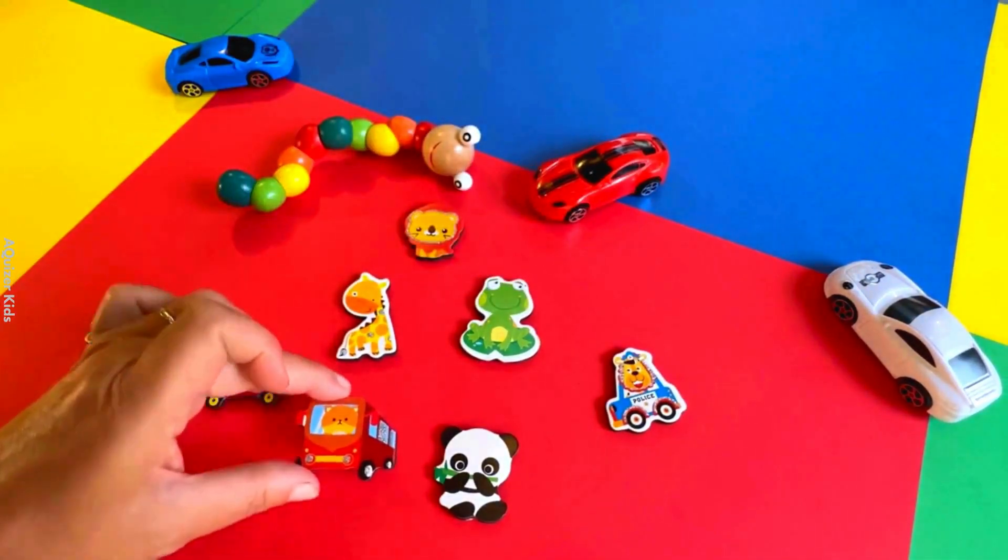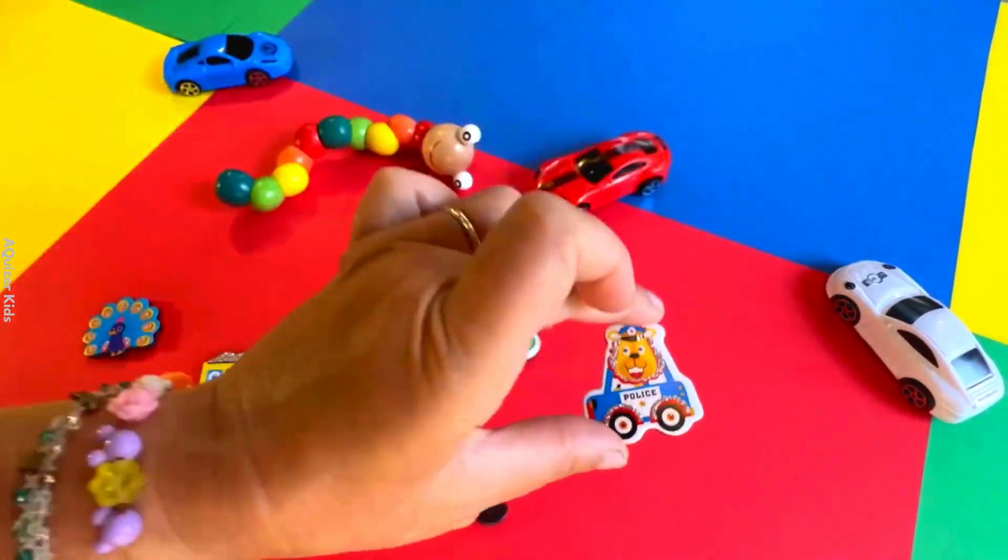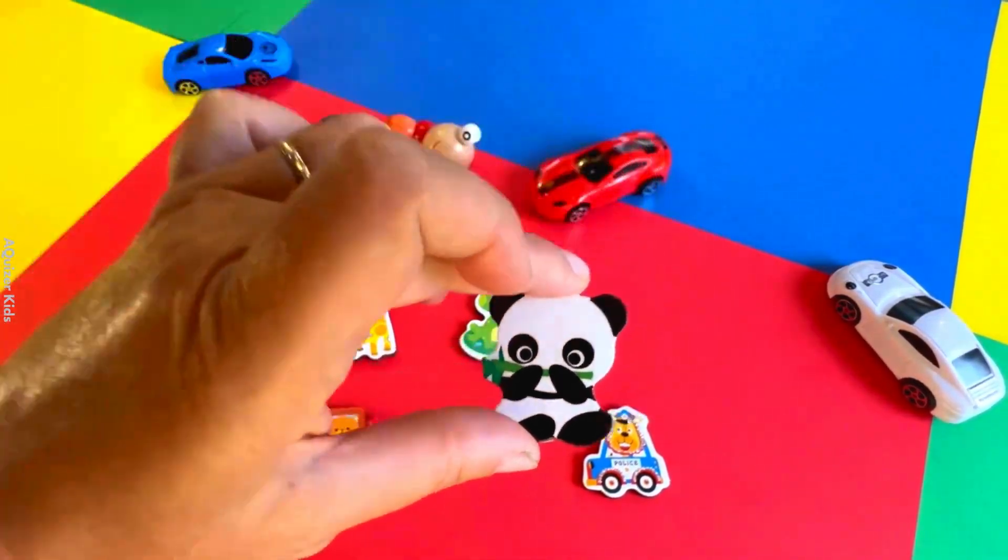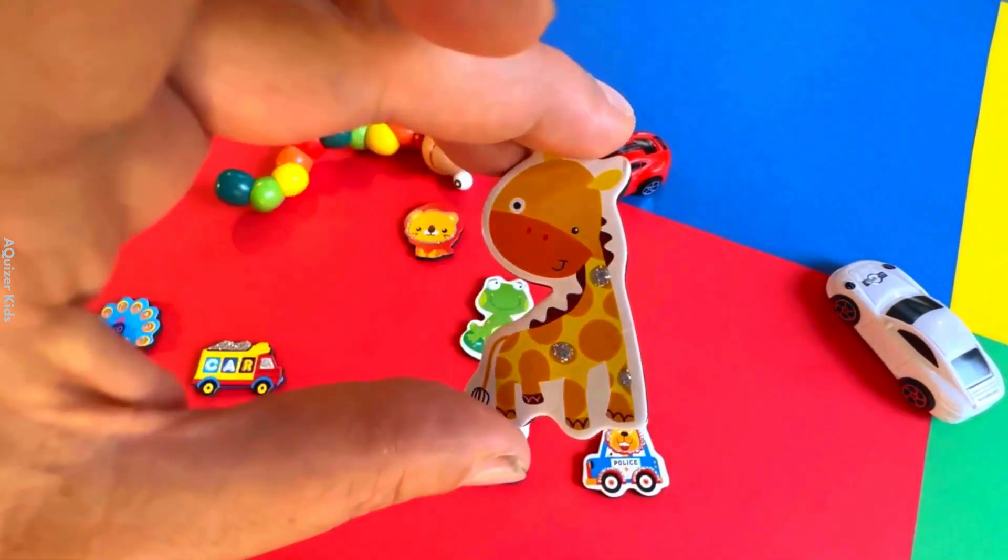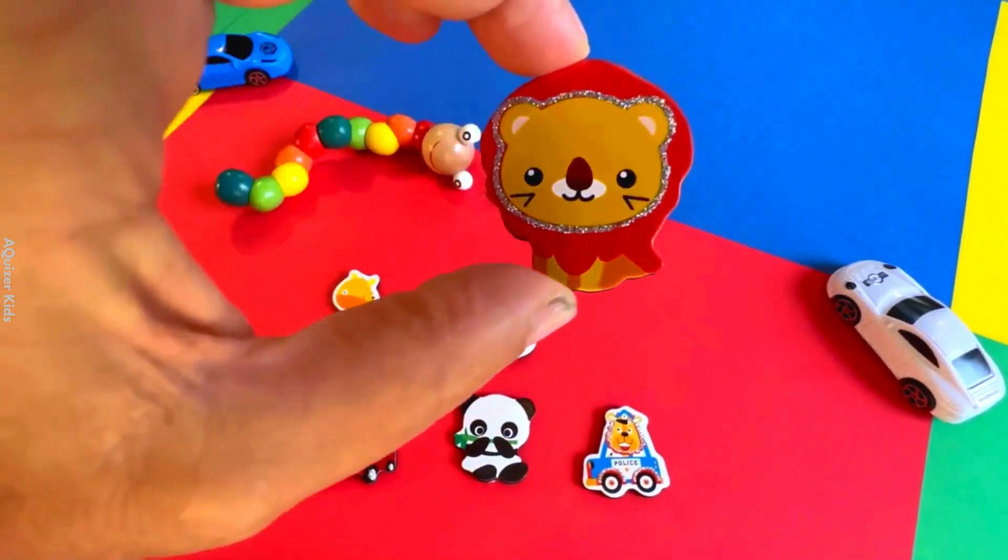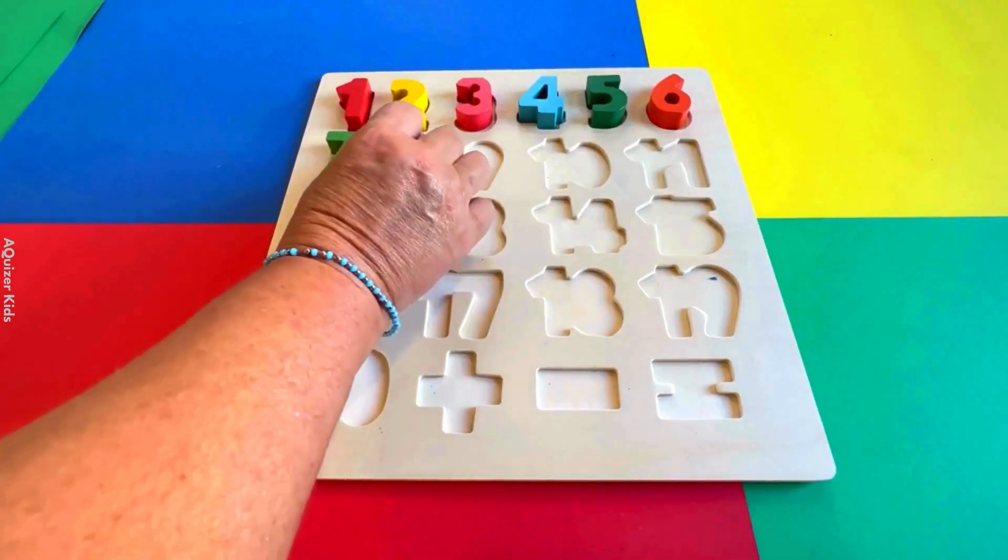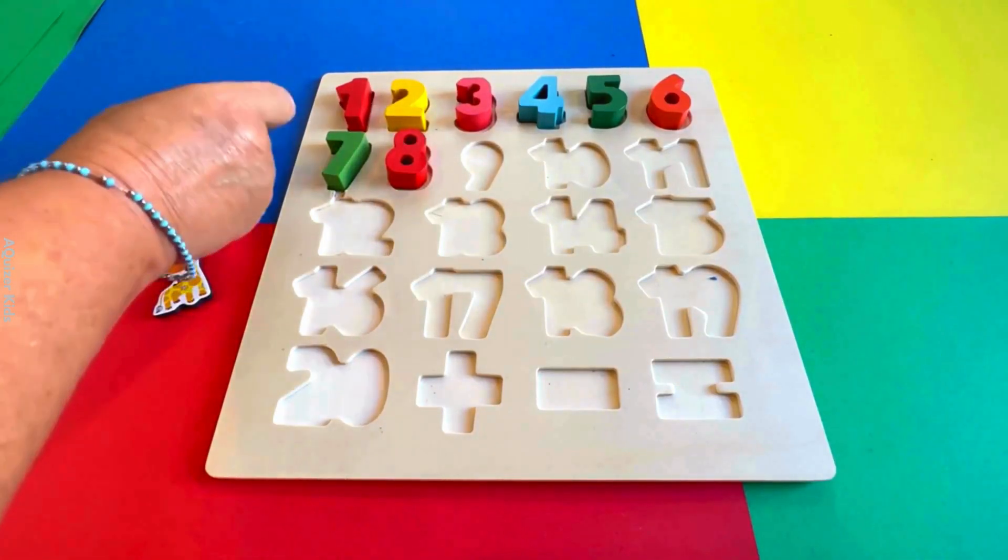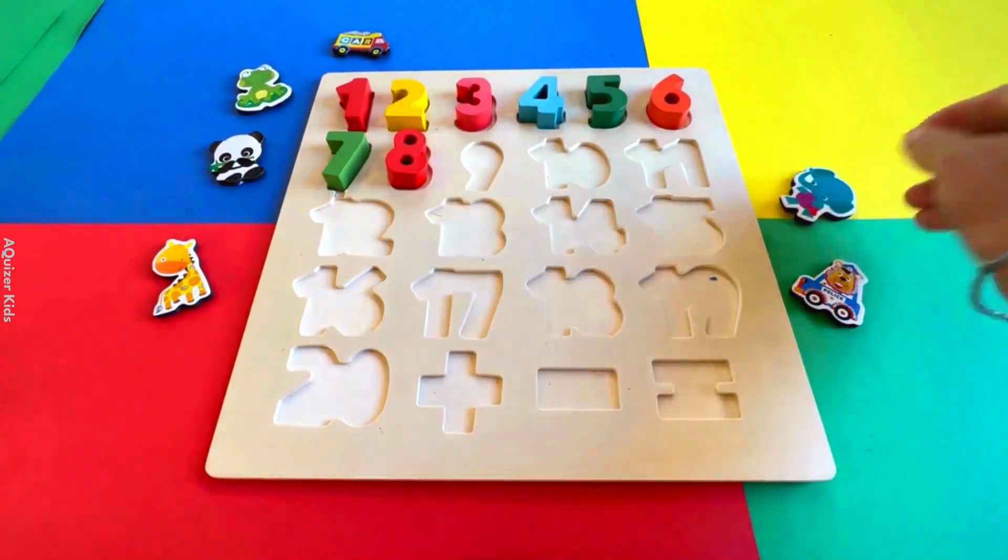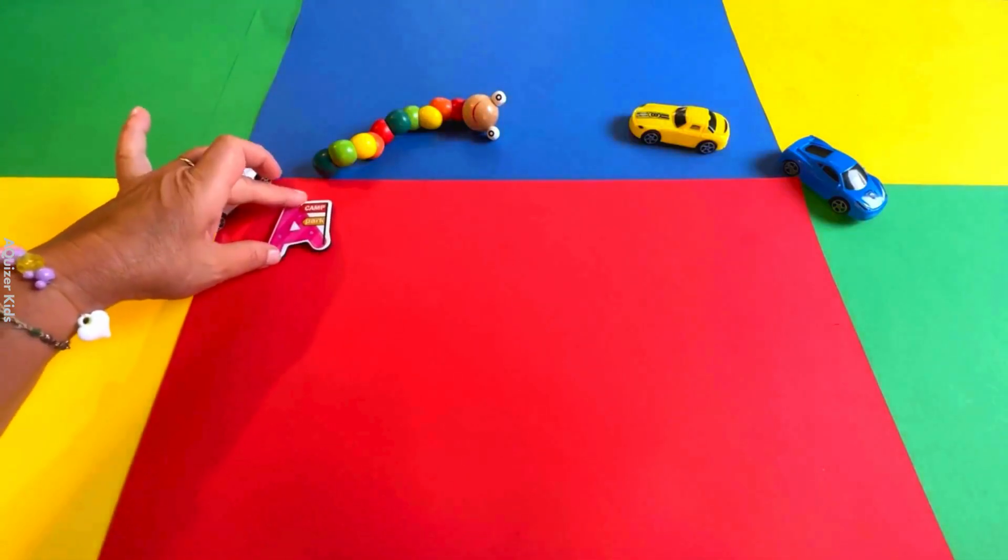How cute are these stickers? One, two, three, four, five, six, and seven. Three, four, five, six, seven, and eight. There are eight stickers. Number eight. One, two, three, four, five, six, seven, eight. Repeat the numbers with me.